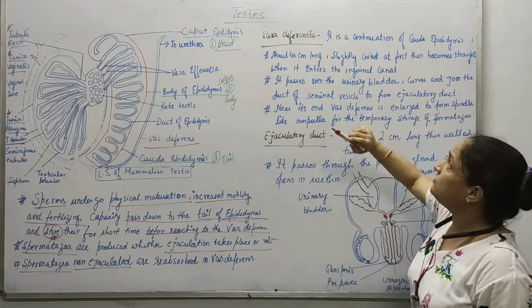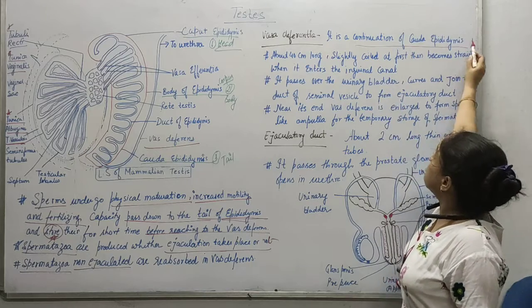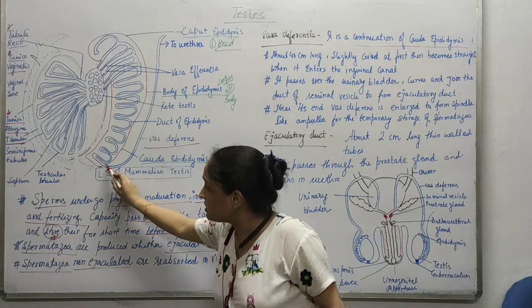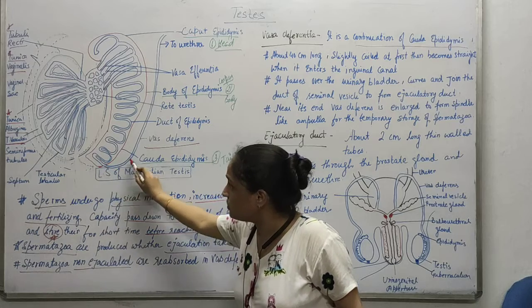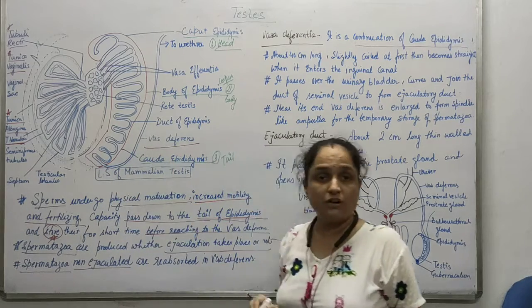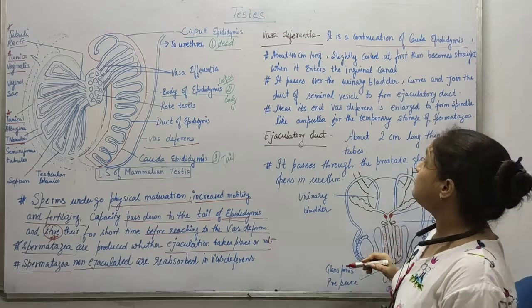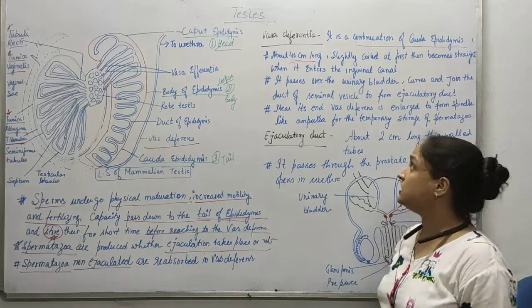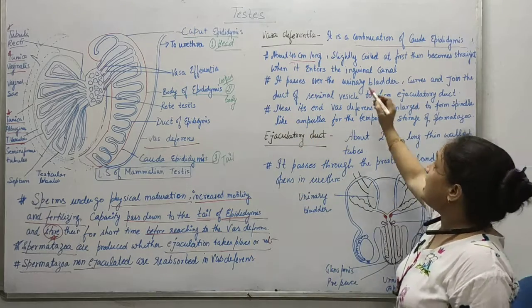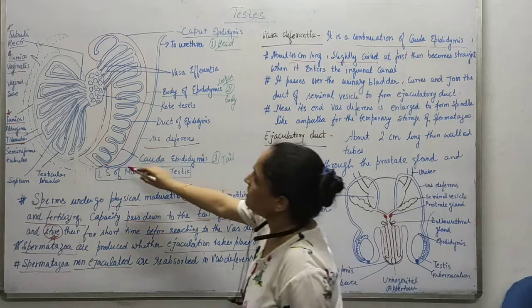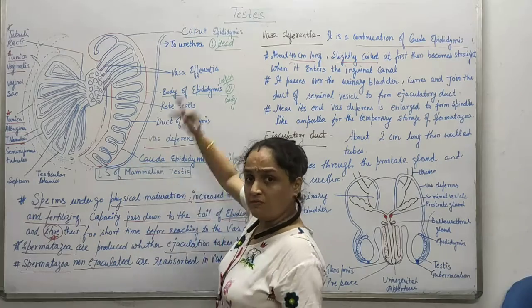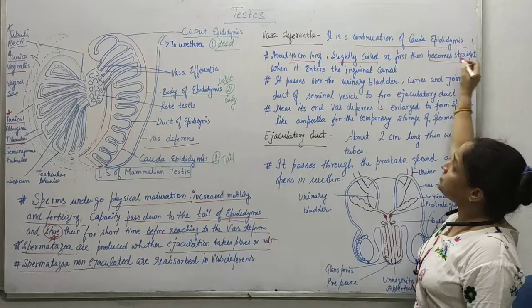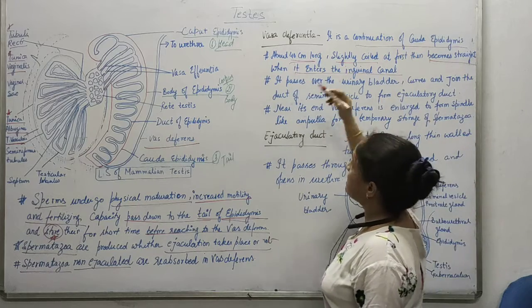Moving ahead, we are going to talk about the vas deferens. It is basically the continuation of the cauda epididymis. This tube continues in the form of the vas deferens. It is nearly 40 cm long, slightly coiled at first, and then it becomes straight when it enters the inguinal canal.